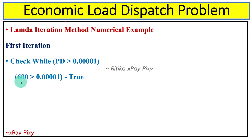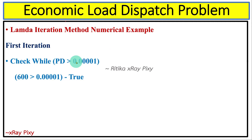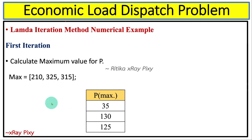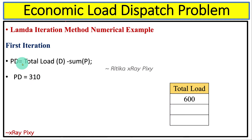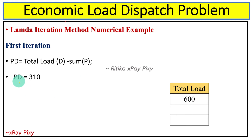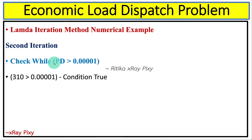For the first iteration, we check the condition — since the value 600 equals the power demand, this condition is true. We move to the next step and calculate the value for P using the lambda equation, then check the minimum and maximum bounds. We then calculate Pd as total load minus the sum of all P values, and we get Pd equal to 310. After that, we calculate the new value for lambda.